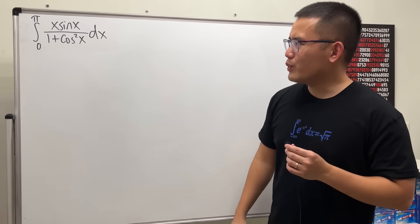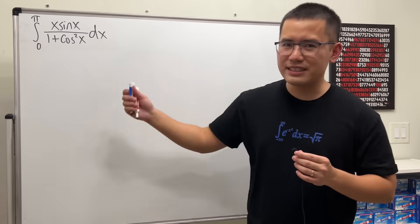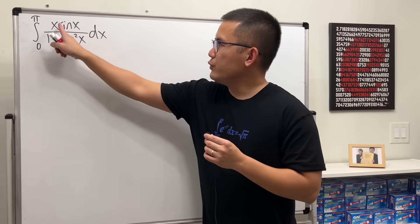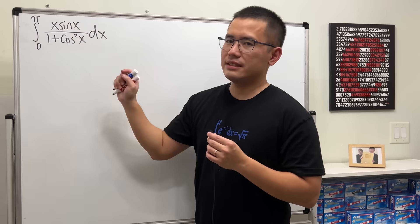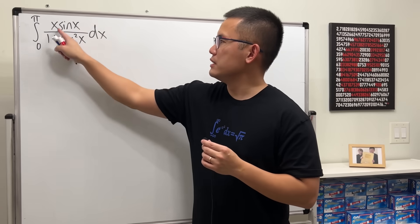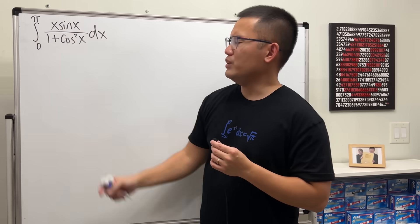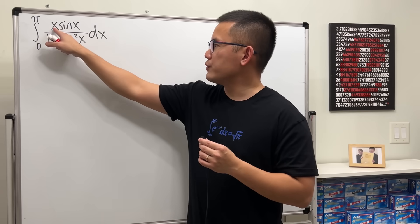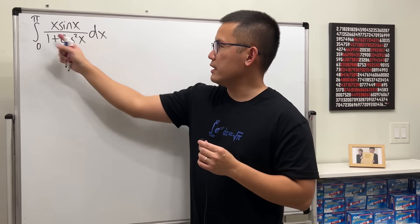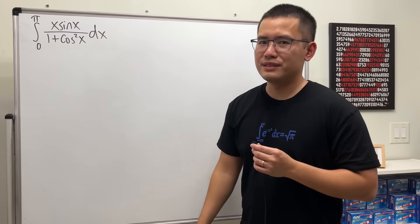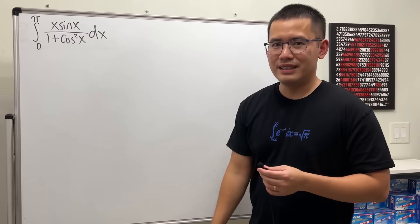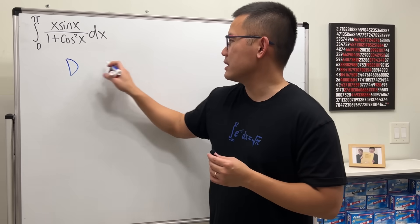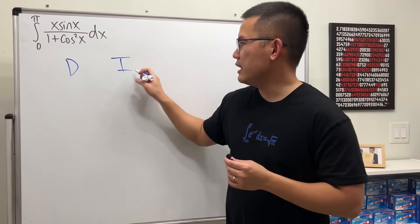I really want to integrate this, so let's try today. First, we notice if we don't have this x with this part, we can totally integrate that — so why don't we differentiate the x and integrate the rest? Let's use the DI method for integration by parts.